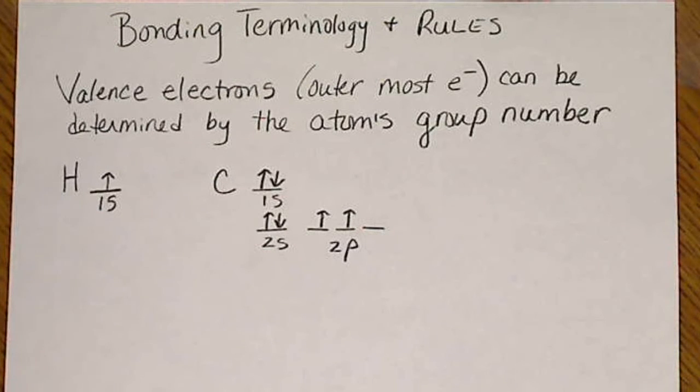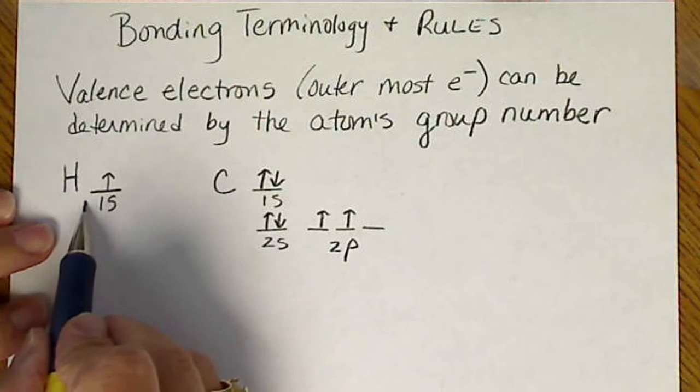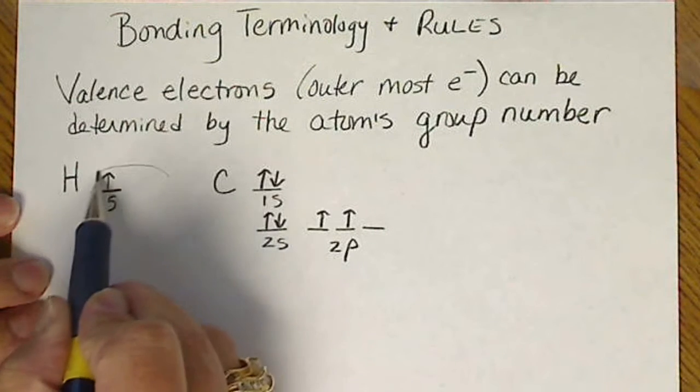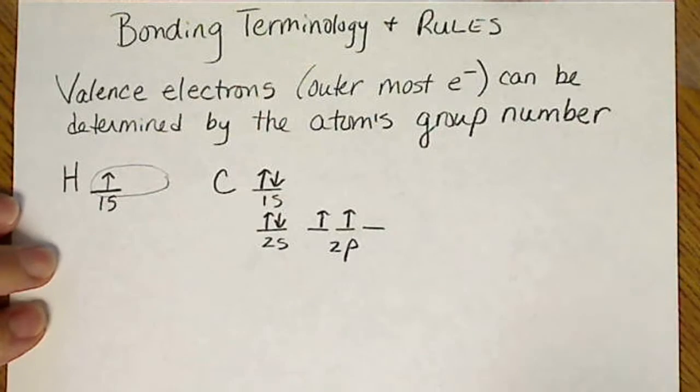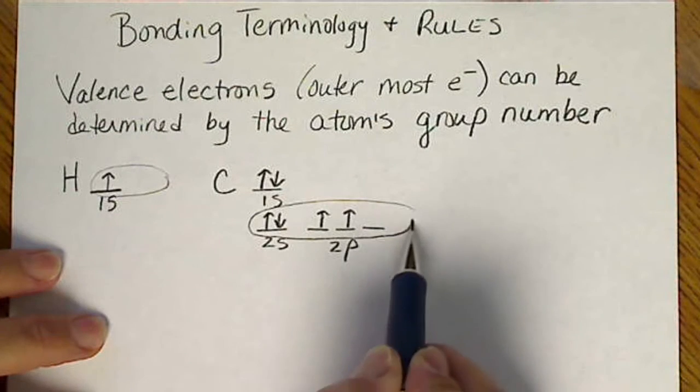Before we start practicing drawing molecules, we've got to get used to some terminology. So we're going to be talking about valence electrons. Those are the outermost electrons, and I just drew an orbital diagram for hydrogen. Well, hydrogen only has one electron. That is the outermost shell.